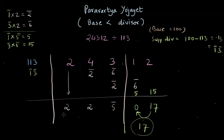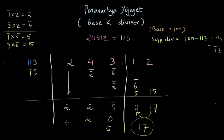Our quotient reads 2, 2, negative 5. Since the 5 has a negative sign, this is 220 minus 5, which equals 215. The remainder is 17. So the quotient is 215 and the remainder is 17.